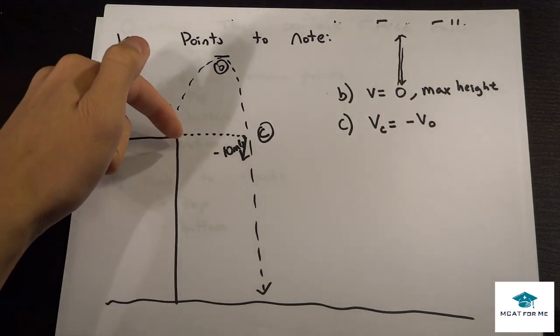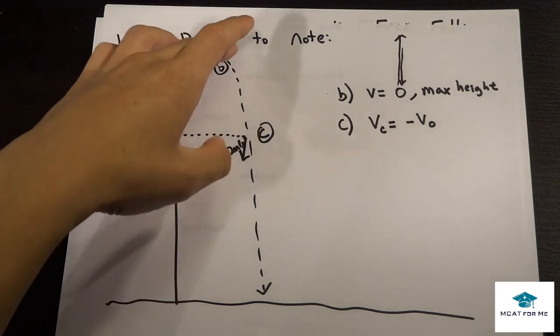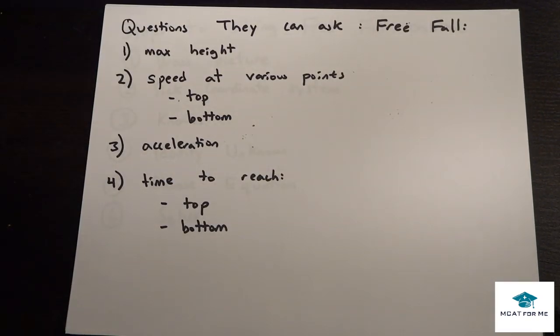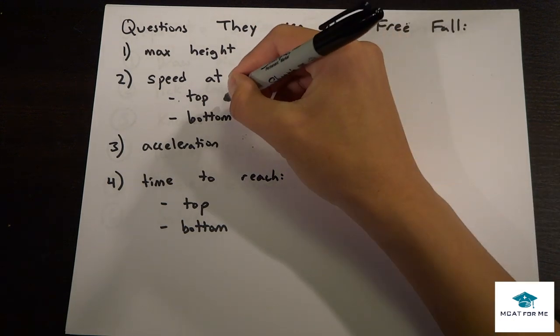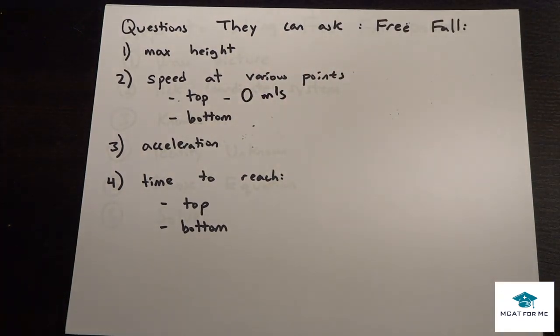You have to be careful if they want to know the height above the hill or the height above the ground, but they'll distinguish that. The next one is the speed at different points. They can ask you the speed anywhere along the curve, but generally they'll only ask you the speed at the very top, and we remember that is zero. That's just kind of a conceptual question. And the speed at the bottom, that's something you'll have to calculate.